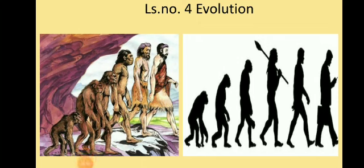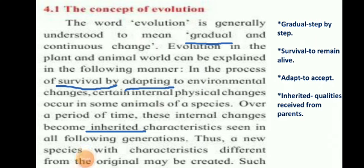As we can see in the picture, the first ape is bent and quite hairy; later it has stood up and the amount of hair is less. These changes don't take place within a decade or century — it takes thousands of years. It is a gradual and very slow process. So the ape didn't give birth directly to the next stage of human; it was slowly and steadily, and whatever changes were taking place were inherited by the next generation. Thus a new species with characteristics different from the original may be created.